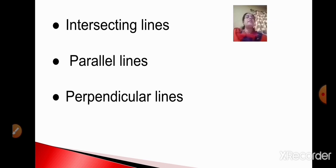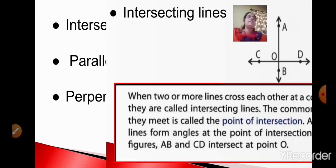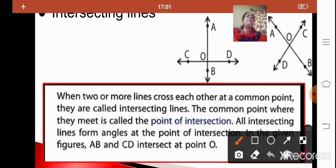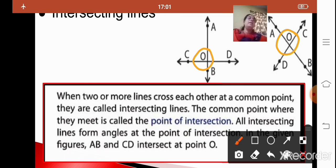First let us study about the intersecting lines. Before we start, let us first understand the meaning of intersect. What do you mean by intersect? Intersect means to meet. Here you can see there are two lines, that is line AB and CD. They meet at one common point, that is O. The point where they meet at one common point is called the point of intersection.